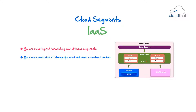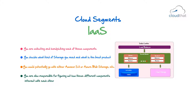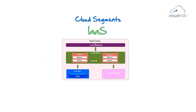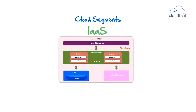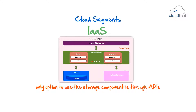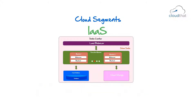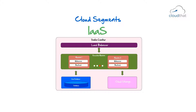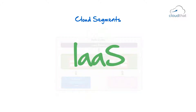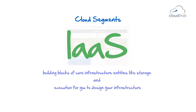You decide what kind of storage you need and what is the best product for it. You would potentially go with either Amazon S3 or Azure Blob Storage or something like that. You are also responsible for figuring out how these different components interact with each other. For example, the storage component might only be accessible through APIs, meaning the code running on your execution machines must call those APIs to store data. Each of these services behaves like an individual building block where you can pick and choose how to plug them in to power your application. These are called infrastructure services — they provide building blocks of core infrastructure entities like storage and execution.